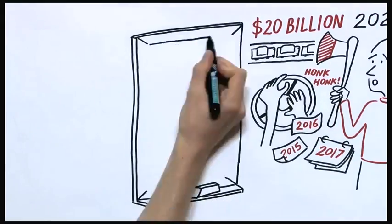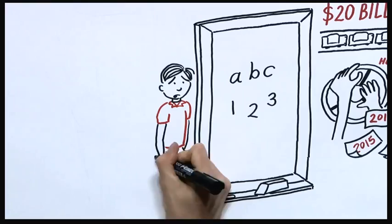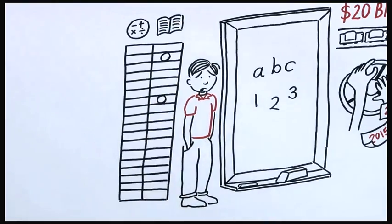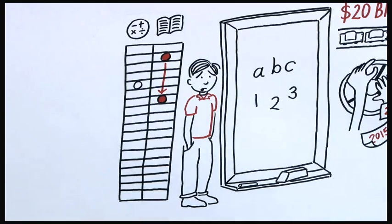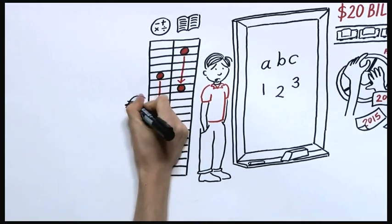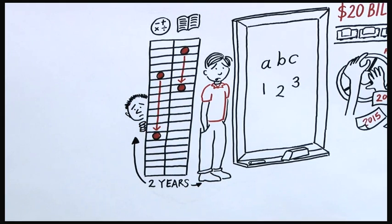We're also making unprecedented investments in school education, because we know that our kids and schools are falling behind. Among similar countries, Australia has gone from second place to seventh place in reading, and from fifth to thirteenth in maths. At the same time, disadvantaged Aussie kids are a full two years behind their classmates in maths, reading, and science.